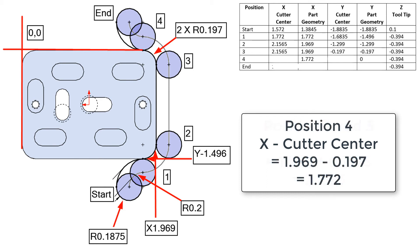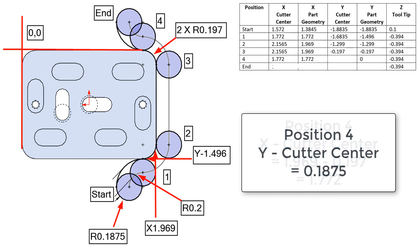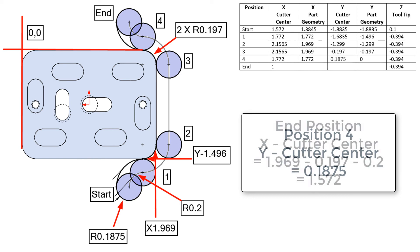At position 4, the X for the center of the cutter will be the same as the part geometry: 1.772. The Y for the center of the cutter will be the cutter radius: 0.1875.